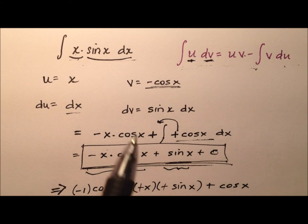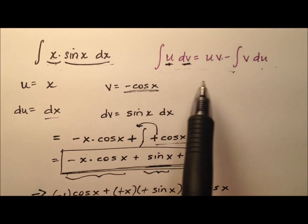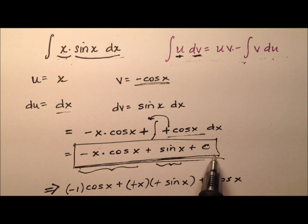So we know that the integral of x times the sine of x with respect to x using integration by parts in this case is going to give us this expression negative x times the cosine of x plus sine of x and then just plus some constant c.